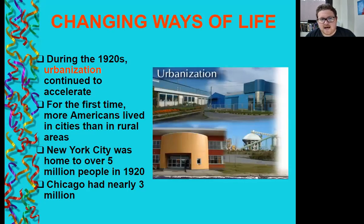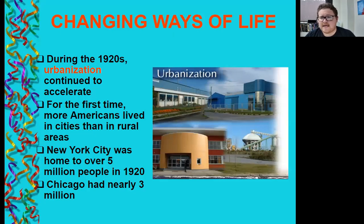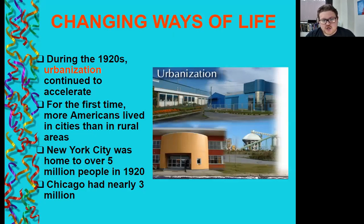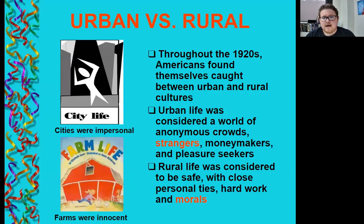There are changing ways of life during the 1920s. Urbanization continued to accelerate — this is the building and planning of cities. For the first time, more Americans lived in cities than in rural areas. New York City was home to over five million people in 1920, and Chicago had nearly three million.